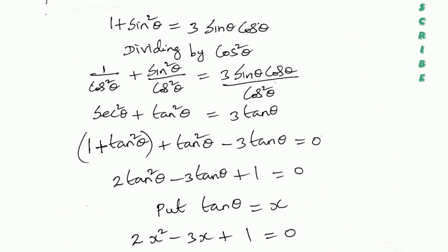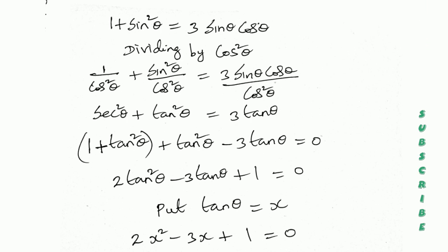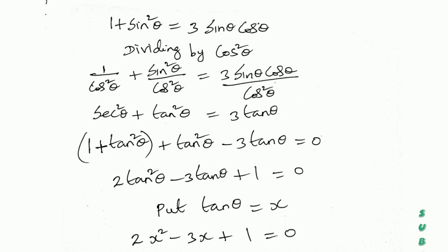Given 1 plus sin squared theta equal to 3 sin theta cos theta. Now dividing by cos squared theta.